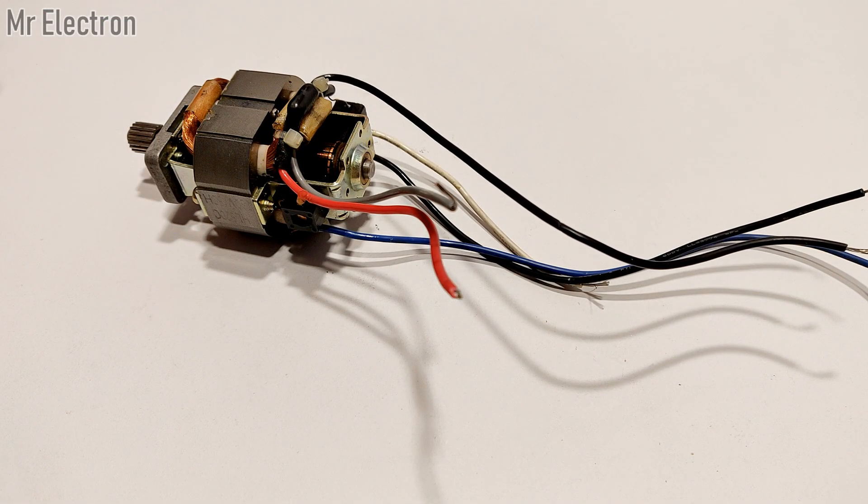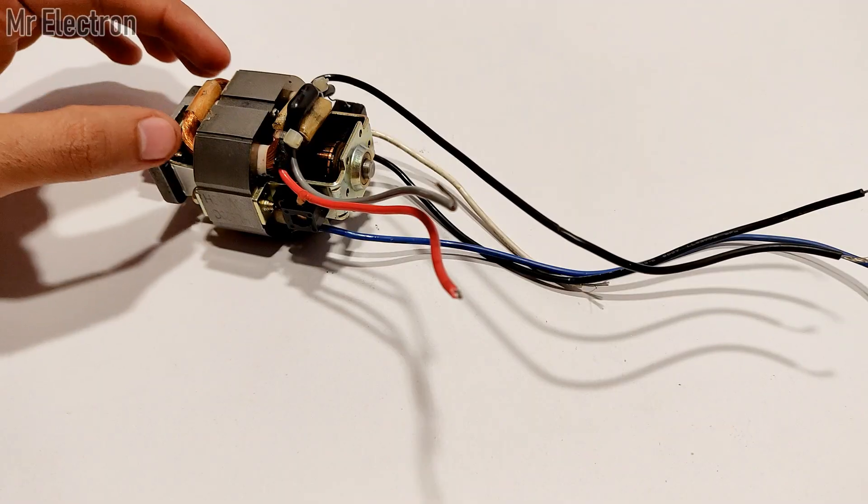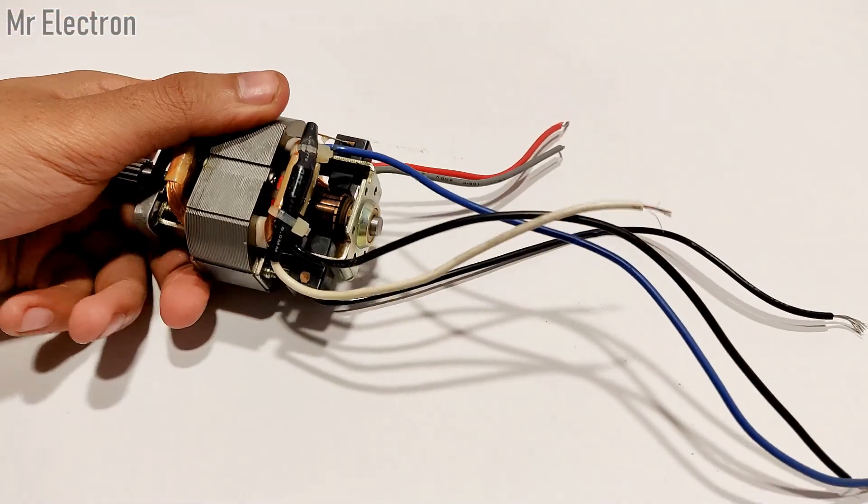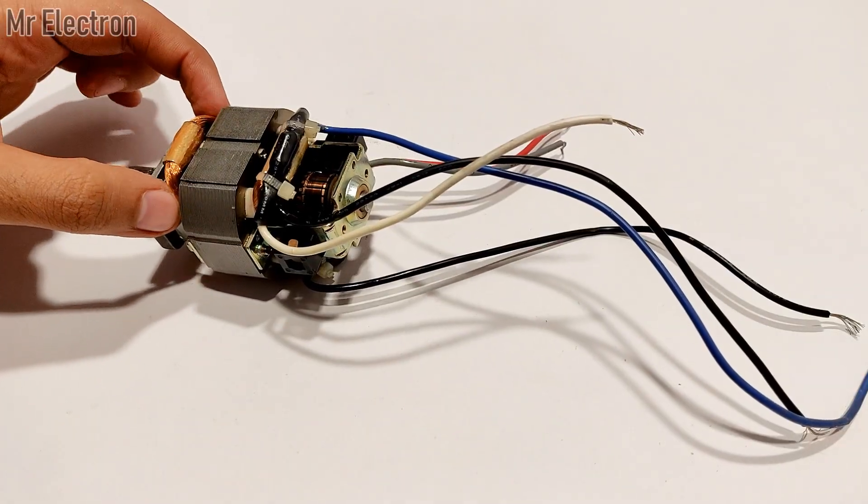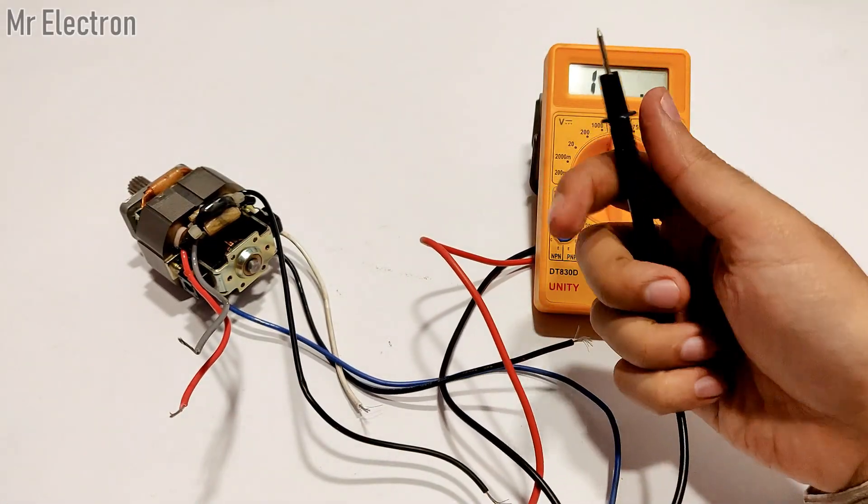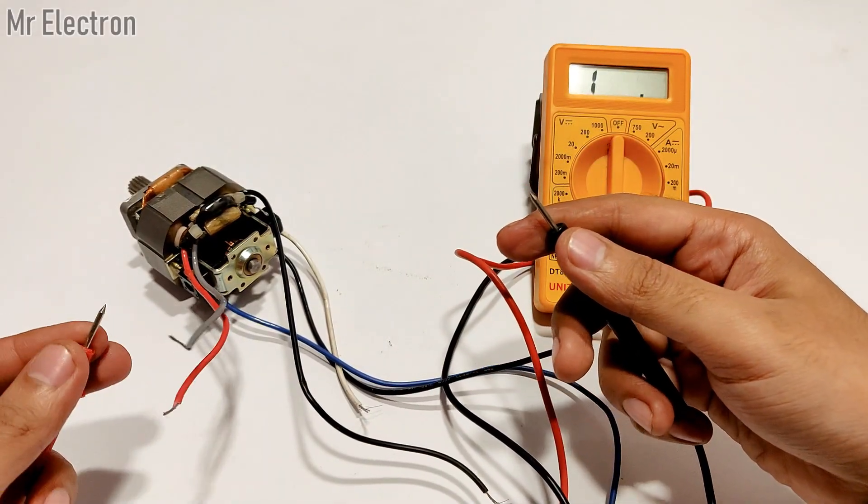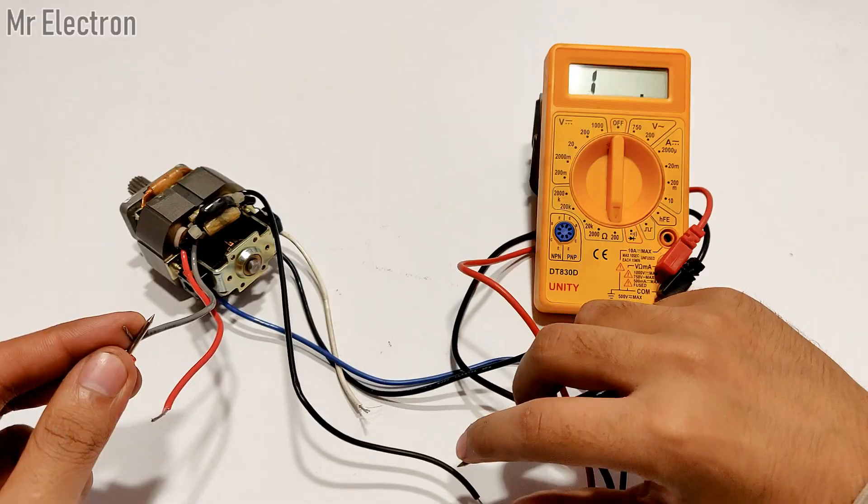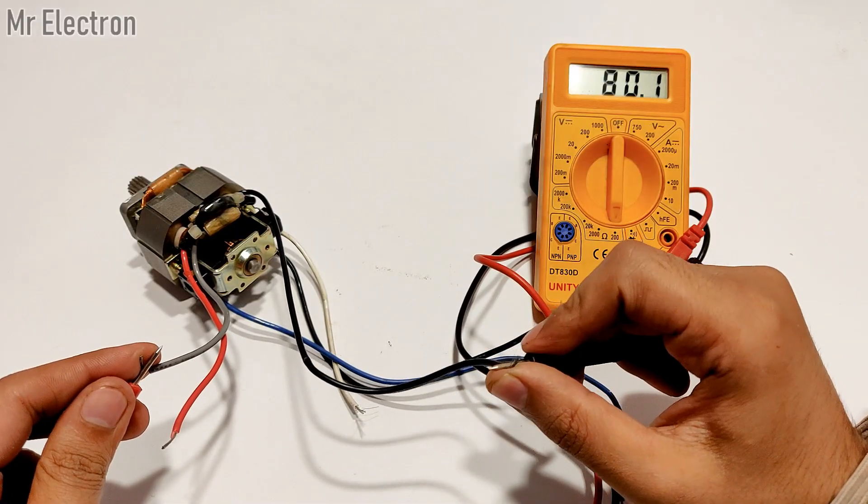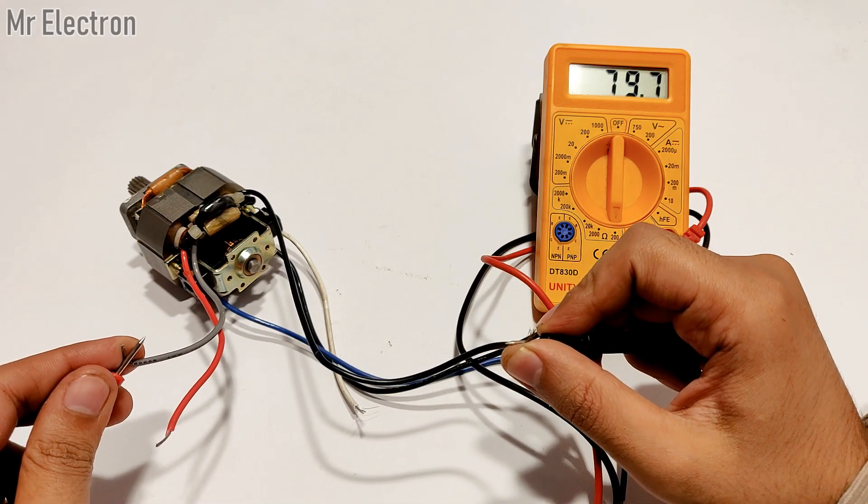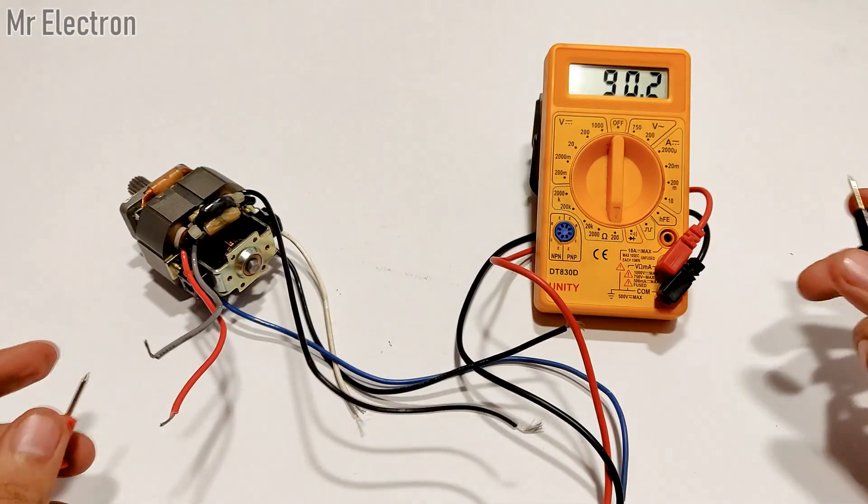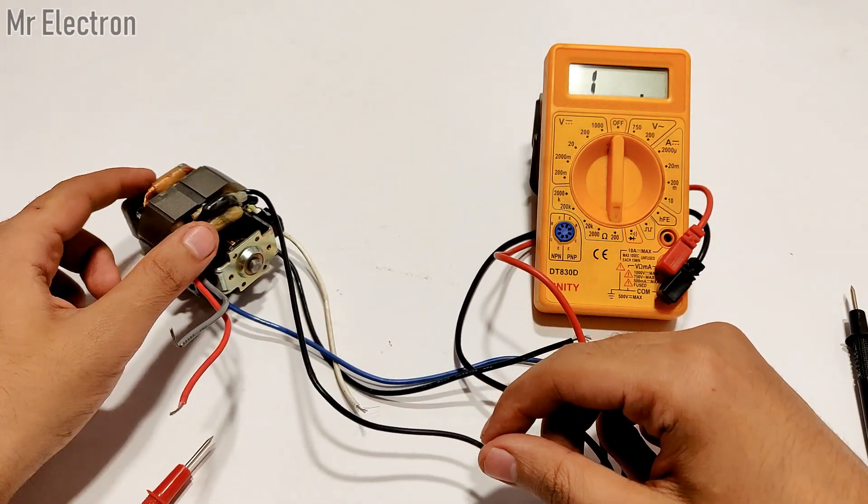First, I will check the two output wires from this field winding, then I will check the two output wires from this field winding. The gray wire and the black wire, as you can see, are showing a resistance of 79.6 ohms, almost 80 ohms. So these coil side output wires are gray and black.